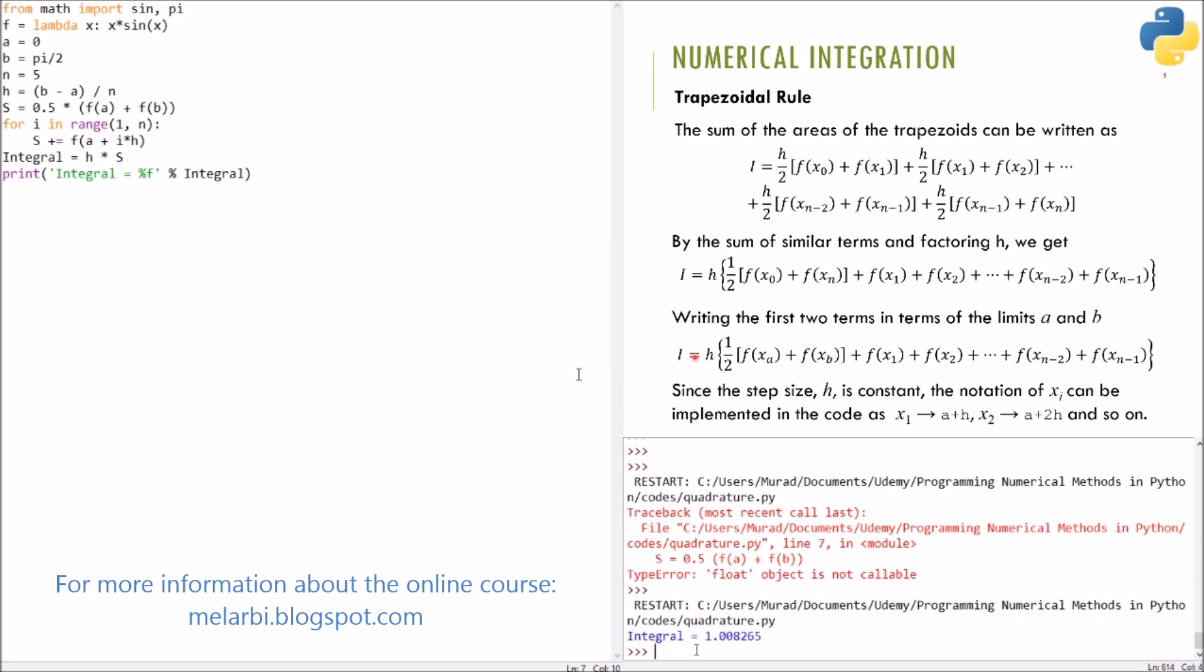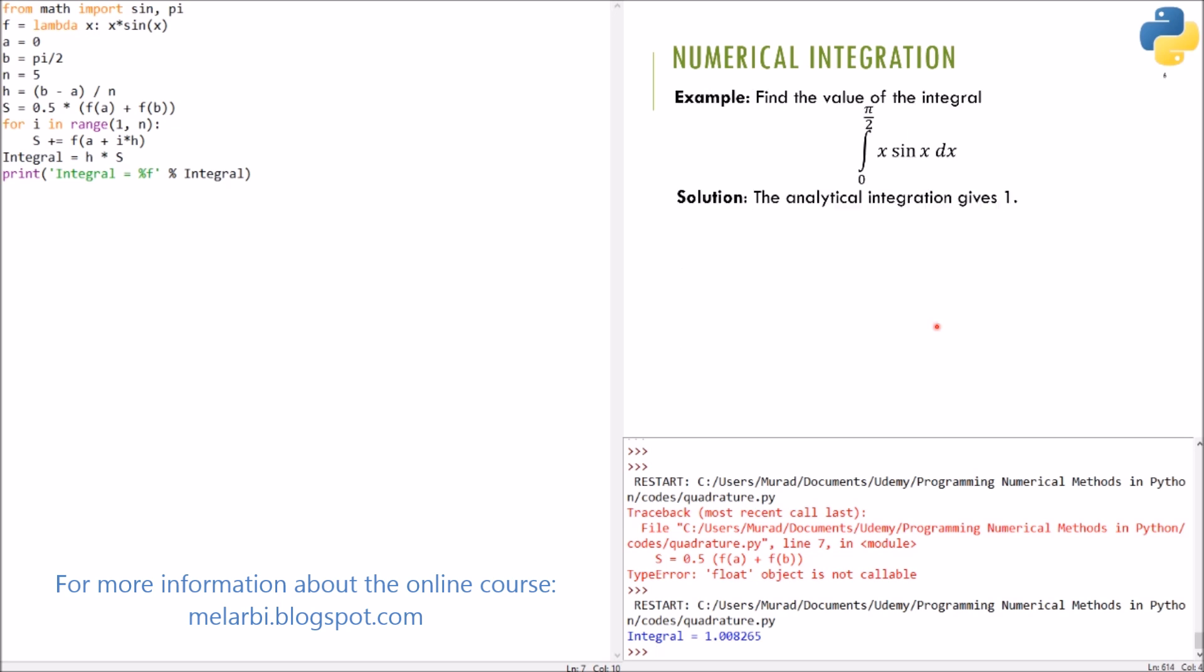Now, integral is 1.008. So, here, when we go to the problem, we know that the analytical integration should give us 1, exactly. So, we see here that the error, which we indicated...